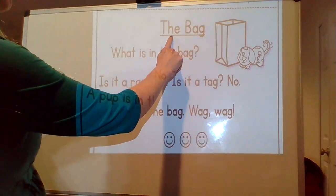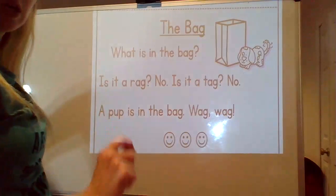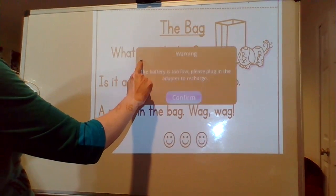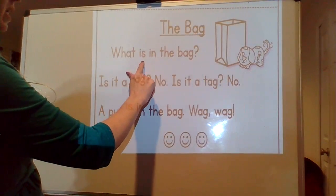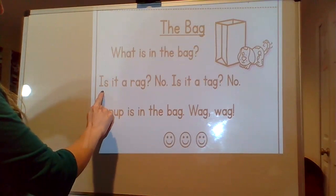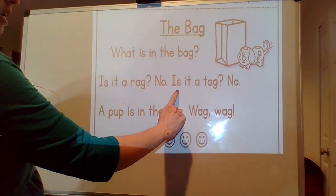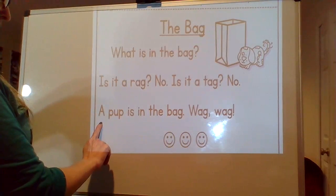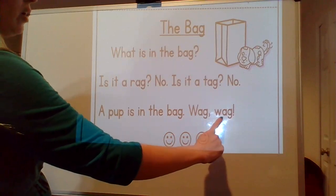Let's start with the title: 'The Bag.' The title of the passage is 'The Bag', so our passage must be about the bag. Let's read. What is in the bag? Is it a rag? No. Is it a tag? No. A pup is in the bag. Wag, wag.